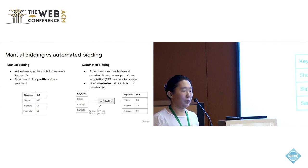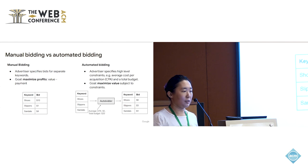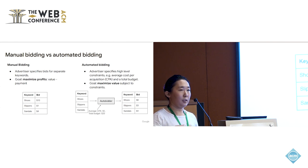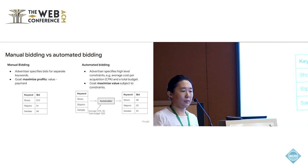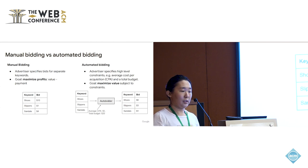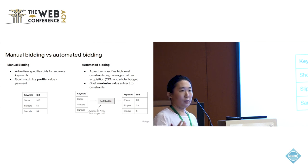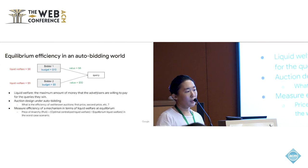There are manual bidding advertisers that specify a bid for each separate keyword, and their goal is to maximize their profit, which is value minus payment. There are also automated bidding advertisers that don't specify a bid for each keyword but specify high-level constraints — for example, average cost per conversion no more than five dollars and a total budget of twenty dollars — and their goal is to maximize value subject to these constraints. For each auto-bidding advertiser there is an auto-bidder agent that takes these constraints and targets as input and converts them to a bid for each keyword.